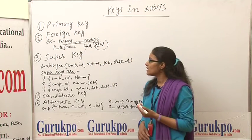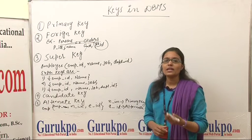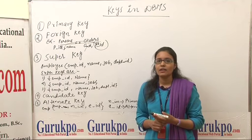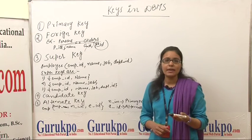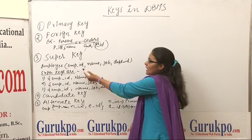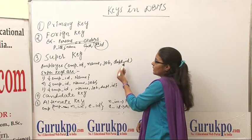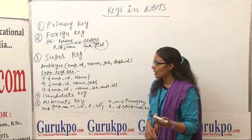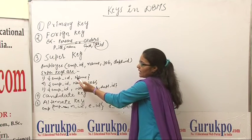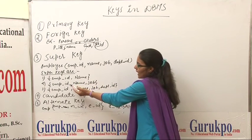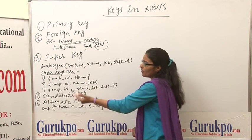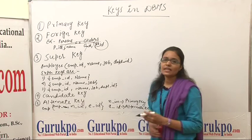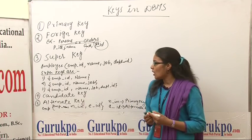The next one is super key. A super key is a combination of fields that is used to uniquely identify each record in a table. For example, we have a table Employee with the fields Employee ID, Name, Job, and Department ID. Using these fields, the possible super keys are: first, Employee ID and Name; second, Employee ID, Name, and Job; and third, Employee ID, Name, Job, and Department ID. So basically, it is a combination of fields.